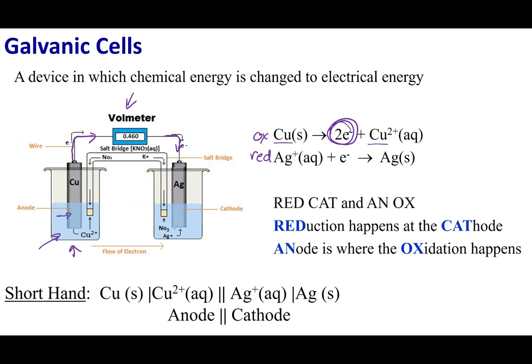In my next beaker, I'm going to run my reduction reaction. I'm going to place all the components in there. I'm going to have my silver metal. I'm also going to have a solution of silver ions. This reaction is going to chew up the electrons that are coming in. So it's going to consume my electrons.